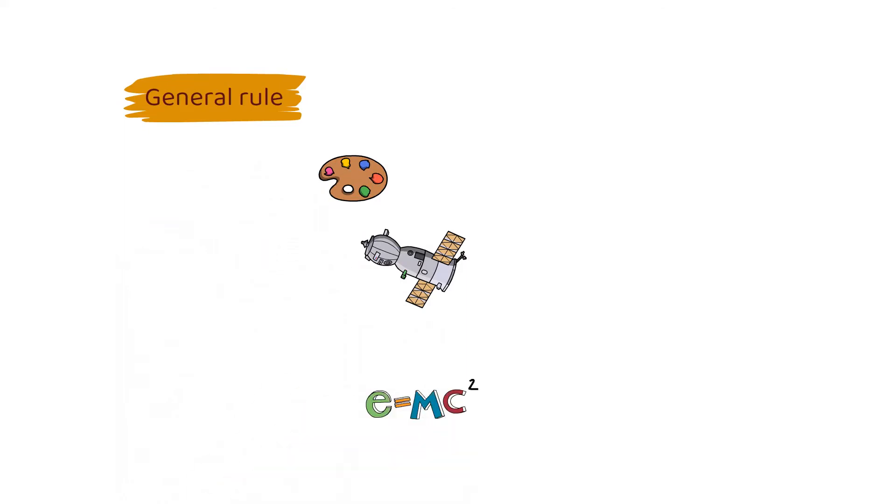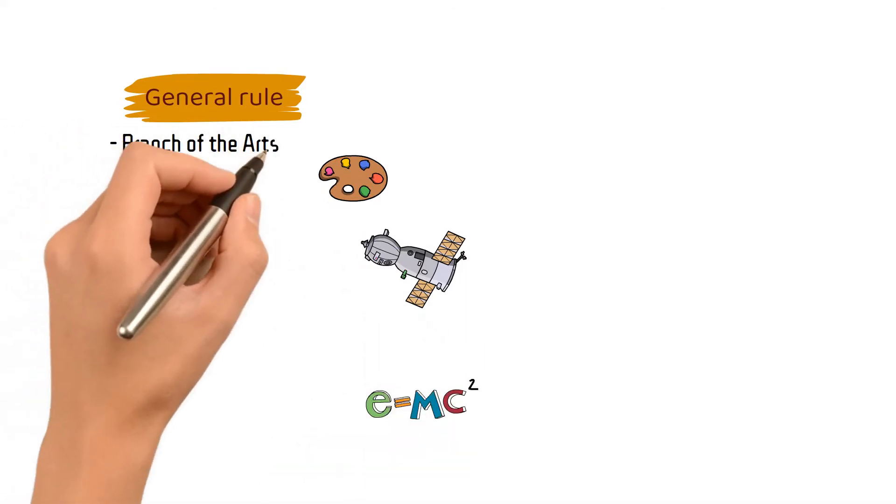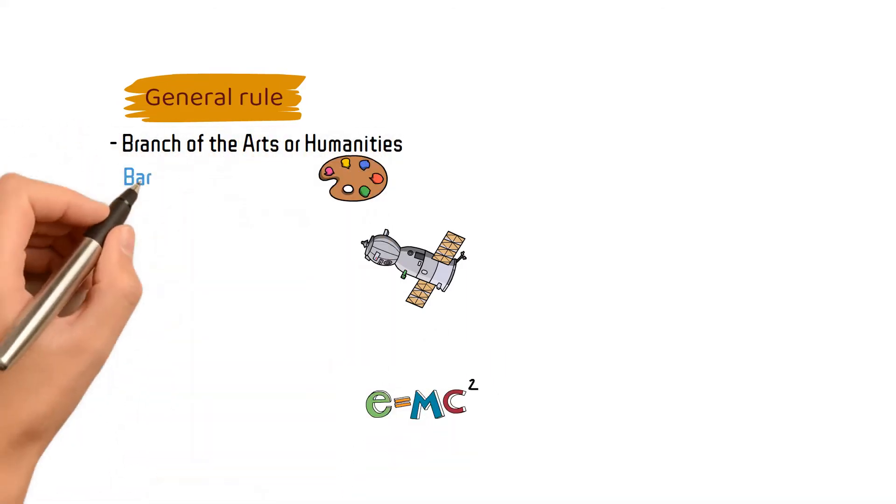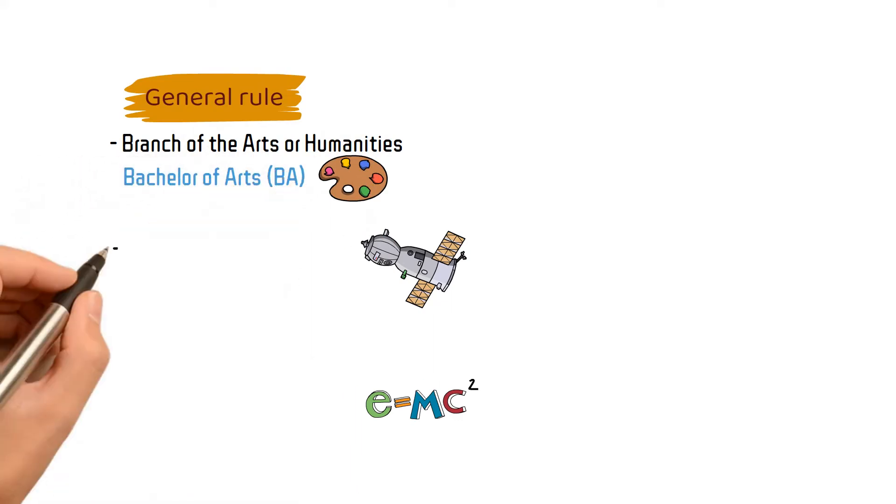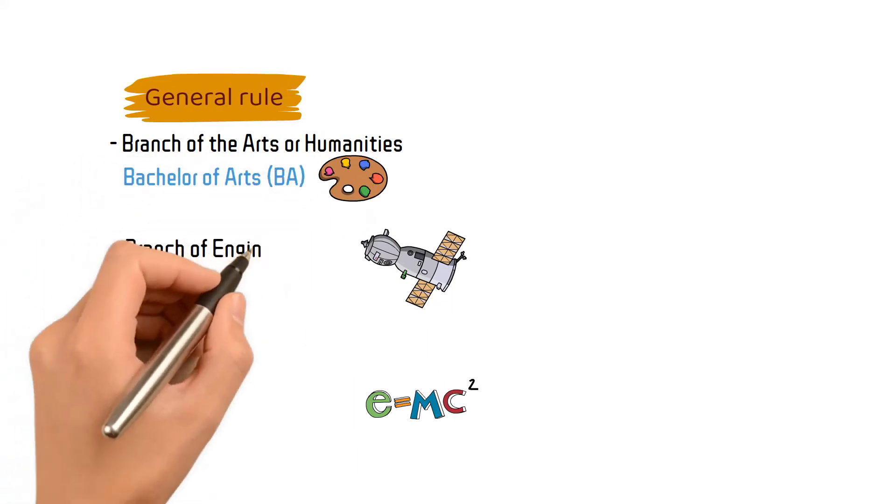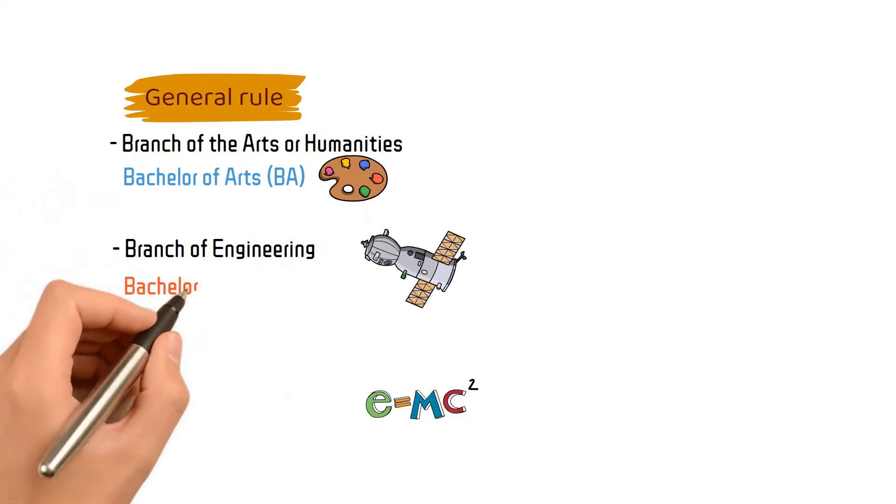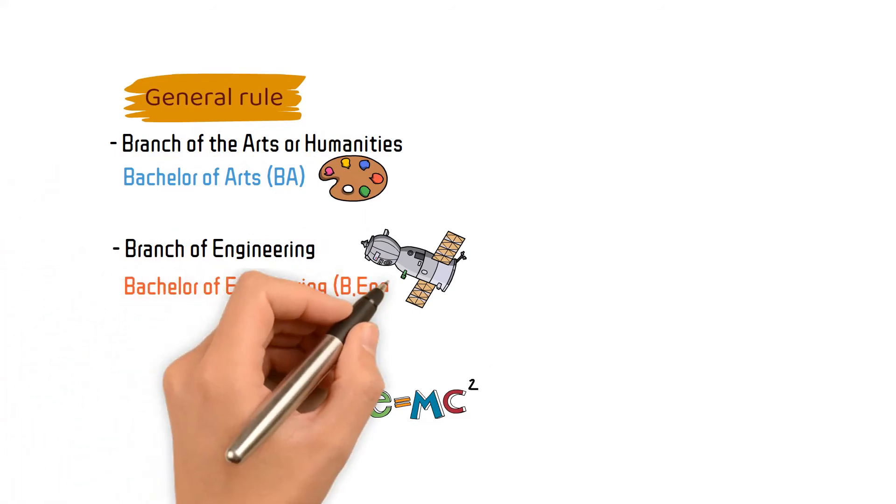That is to say, for the branch of arts or humanities, you will normally get a Bachelor of Arts degree. Then for a branch of engineering, it's clear that you will get a Bachelor of Engineering degree. Then again, for a branch of science, you will get a Bachelor of Science degree.